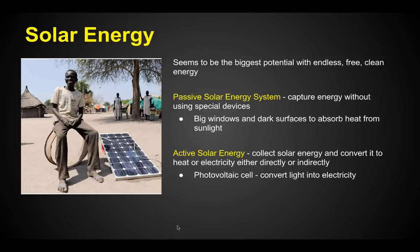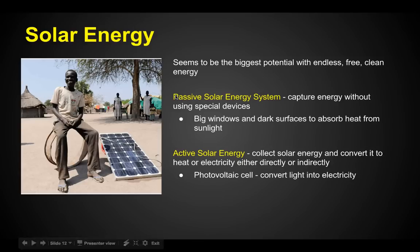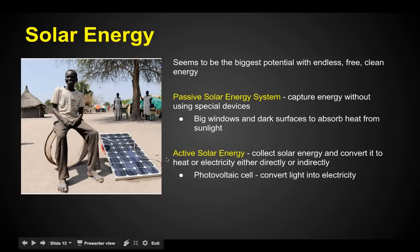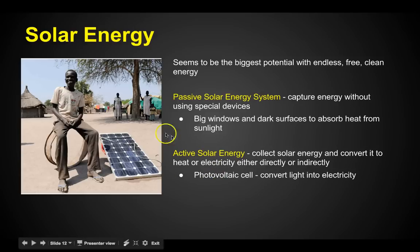There are two types of solar energy systems. A passive solar energy system captures energy without special devices — like big windows or dark surfaces painted black to absorb heat from sunlight. An active solar energy system collects energy from the sun and transfers or converts it to heat or electricity. The biggest example is the photovoltaic cell, which converts light into electricity — that's what those of us with solar panels on our houses have, from companies like Solar City.